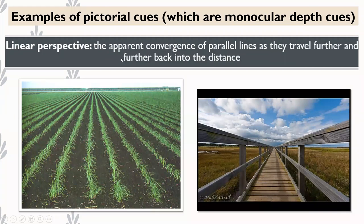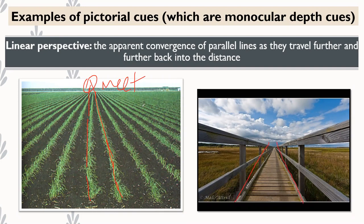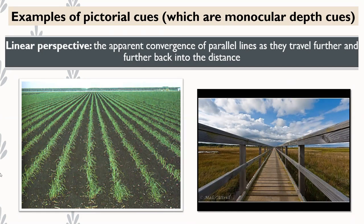For example, two parallel lines of grass or the sides of a bridge — as they move further and further into the distance, they look like they're going to meet together. That's linear perspective: the word linear coming from line, referring to two parallel lines that appear to meet at some point in the distance.